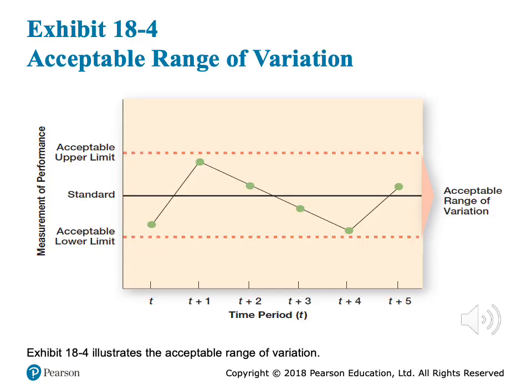This chart shows exactly what we mean. There is an upper acceptable limit and a lower acceptable limit, and the standard in the middle. With a standard of 18, the upper acceptable limit is 20 and the lower acceptable limit is 16. If the actual performance falls between 16 and 20, we accept it. If it falls above 20 or below 16, we do not accept the performance.